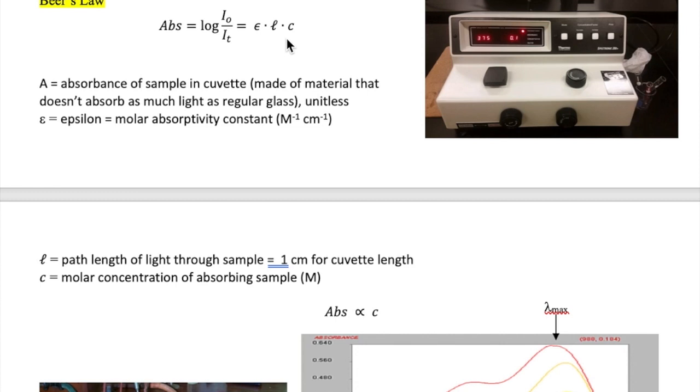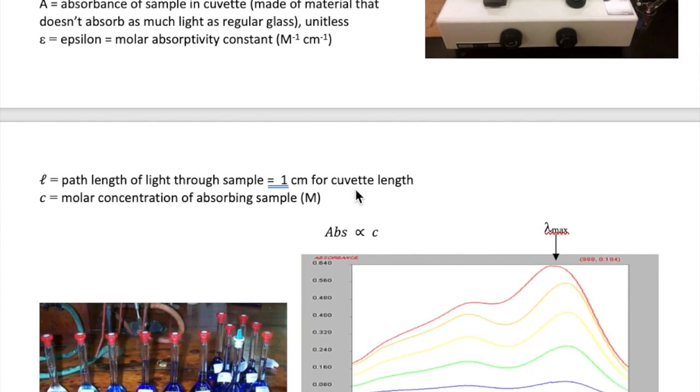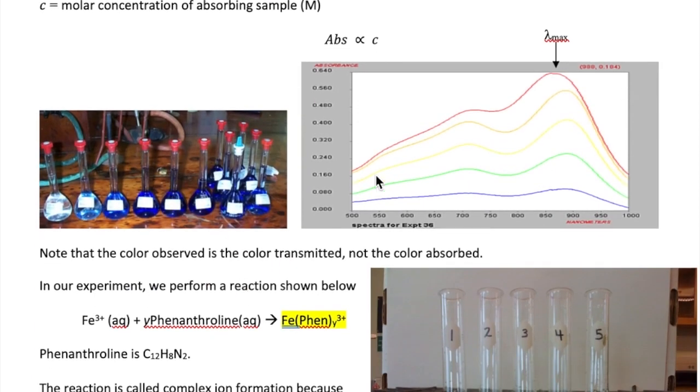which represents the molar concentration or molarity of the sample, and that's the one that we're interested in the most. A simpler relationship can be written this way, which just shows that absorbance is proportional to molar concentration. Simply what that means is that your sample, if it's concentrated,